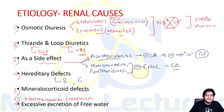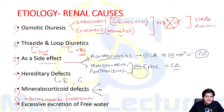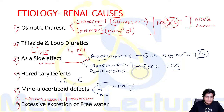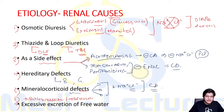Hereditary defects like Bartter syndrome and Gitelman syndrome also lead to hypovolemia. Mineralocorticoid defects — in the form of either deficiency of mineralocorticoid, resistance, or receptor inhibition by drugs like amiloride and spironolactone — will decrease sodium chloride reabsorption through the collecting duct, that is the distal nephron, leading to hypovolemia.